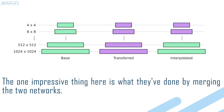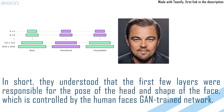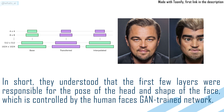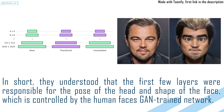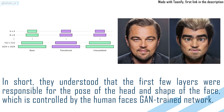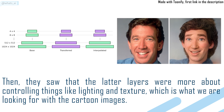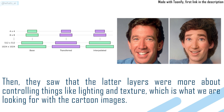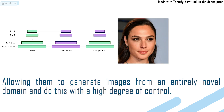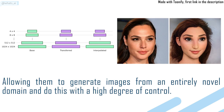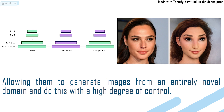The impressive thing here is what they've done by merging the two networks. They understood that the first few layers were responsible for the pose of the head and shape of the face, controlled by the human-faces GAN-trained network. Then they saw that the latter layers were more about controlling things like lighting and texture, which is what we're looking for with the cartoon images, allowing them to generate images from an entirely novel domain with a high degree of control.